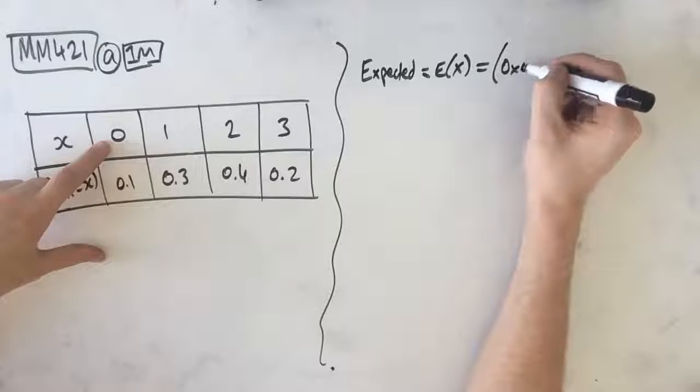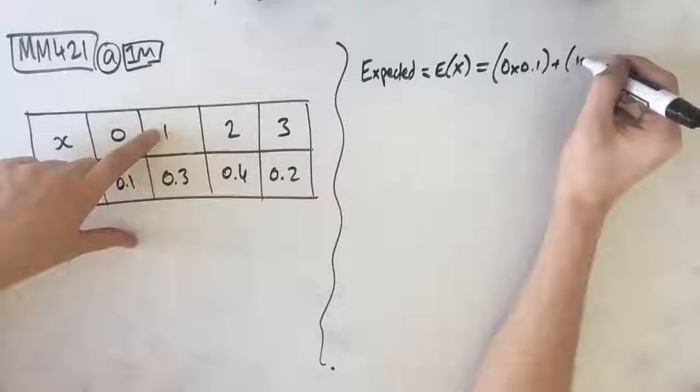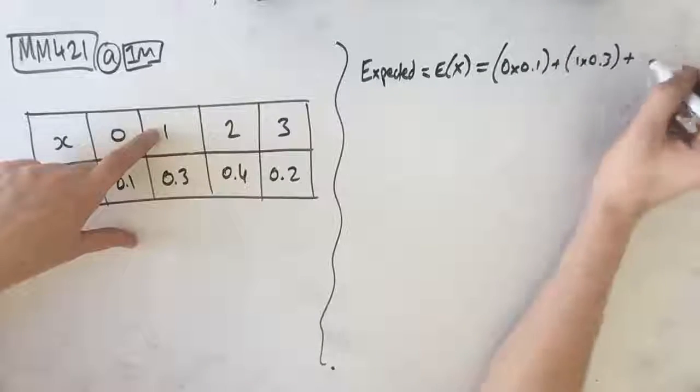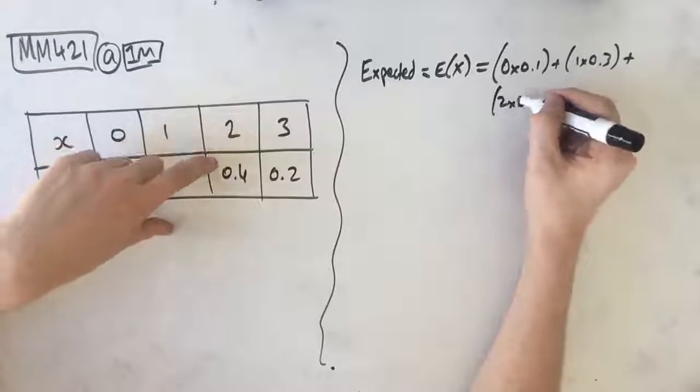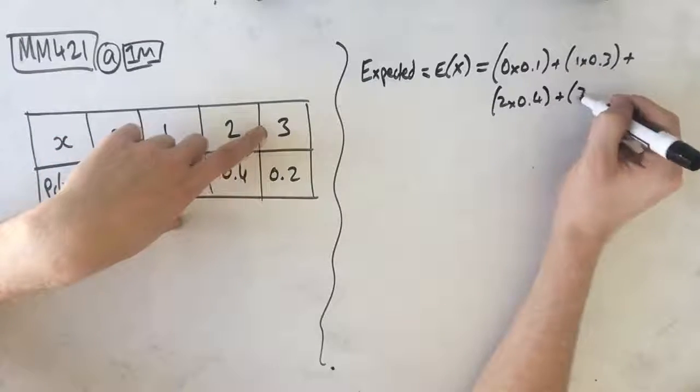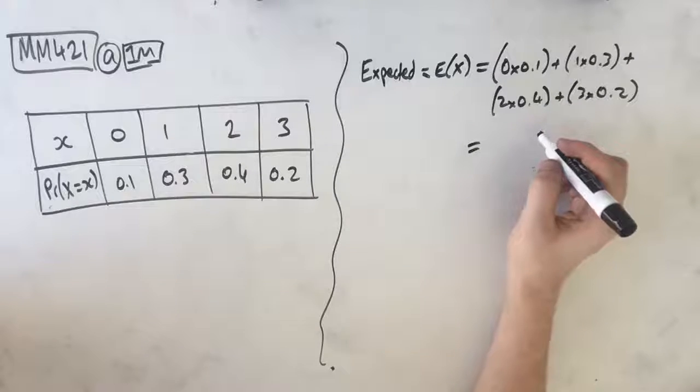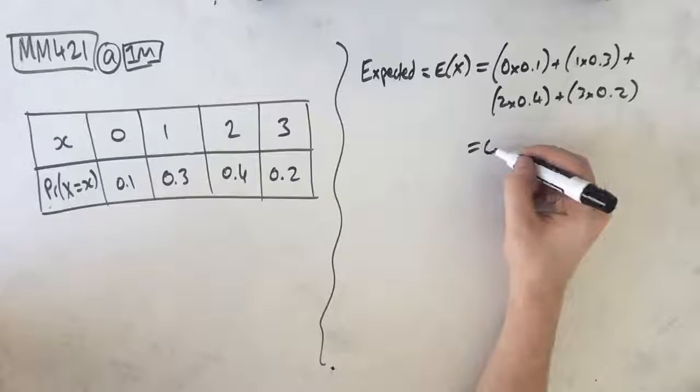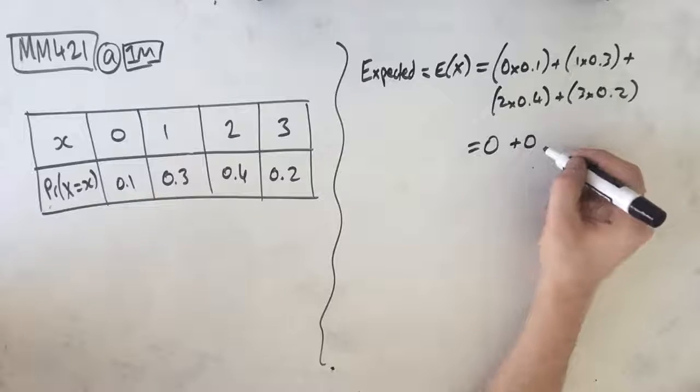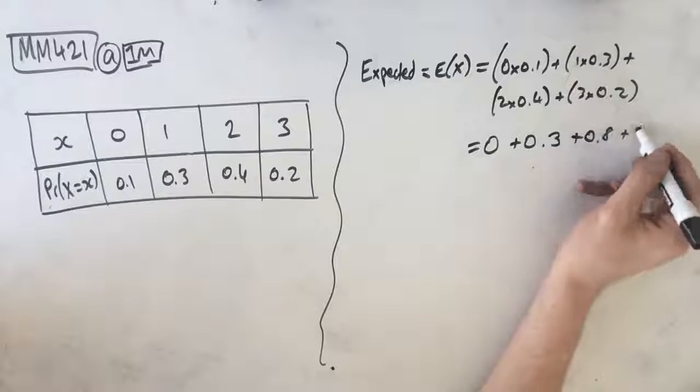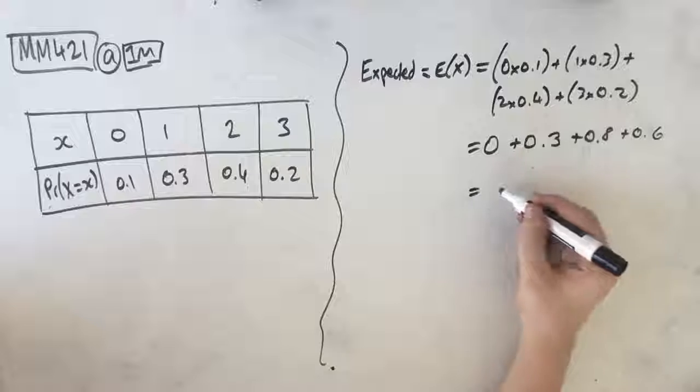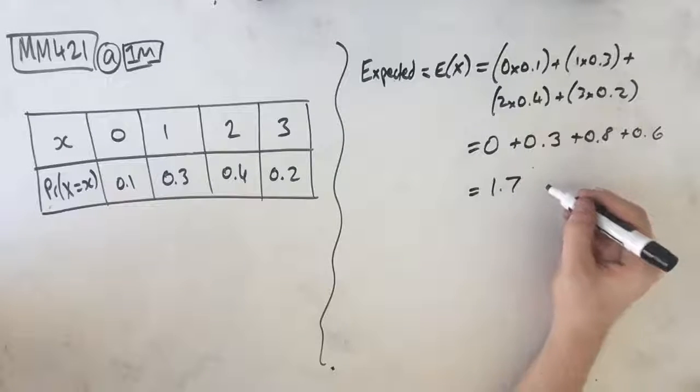So we get our 0 times 0.1, plus 1 times 0.3, plus 2 times 0.4, plus 3 times 0.2. And what this gives us, we're not allowed to use a calculator here, so we're trying to do this without one. So plus 0.3, plus 0.8, plus 0.6, which is 1.7.